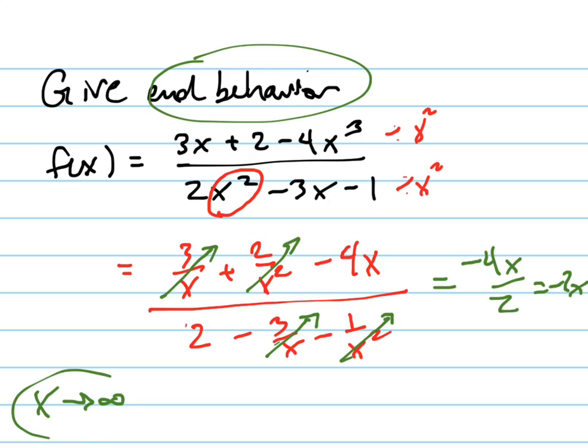So when x goes to positive infinity, I'm going to have negative 2 times a very large positive number, which goes to negative infinity, or they're asking for the end behavior, it goes down as x goes to the right.